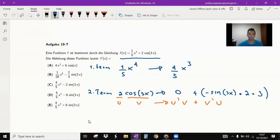So we have four over five x cubic minus six sin three x. So it's d.